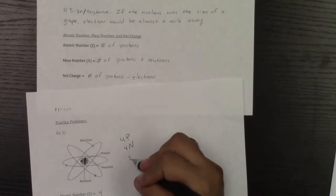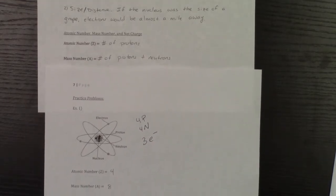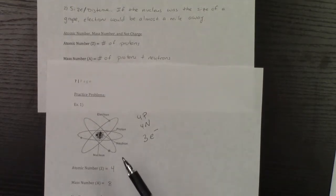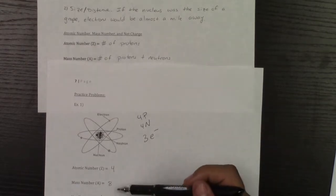And it's got three electrons. And so if that's the case, your atomic number is going to be the number of protons. That's why your atomic number is four. Your mass number is the sum of the protons and neutrons. That's why that's eight.